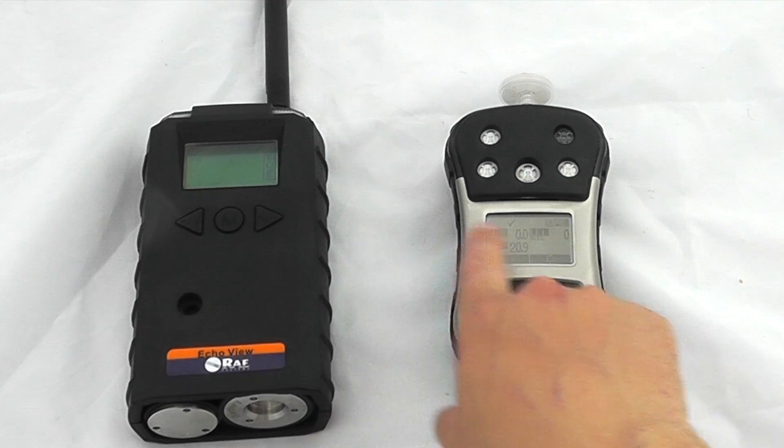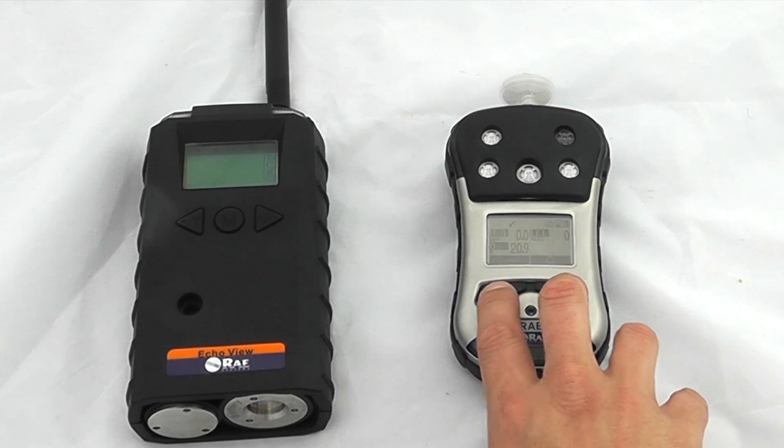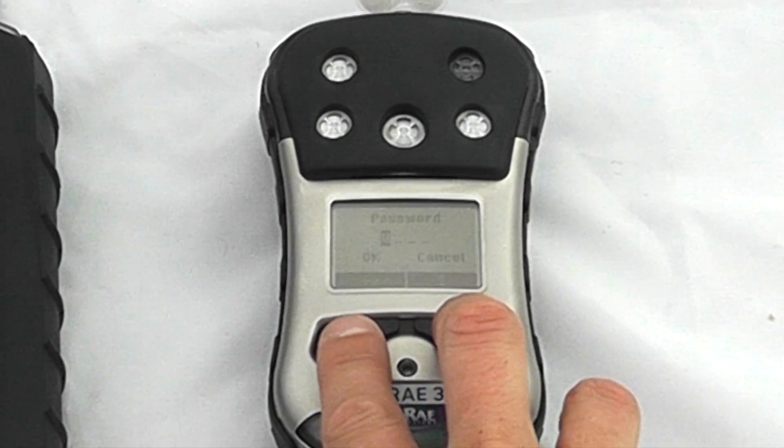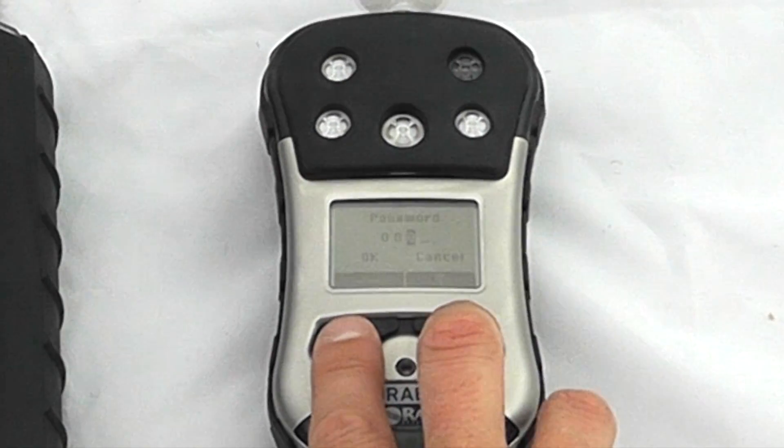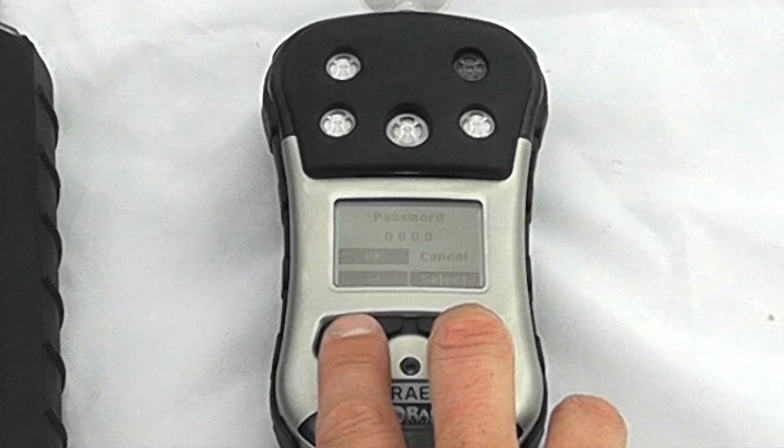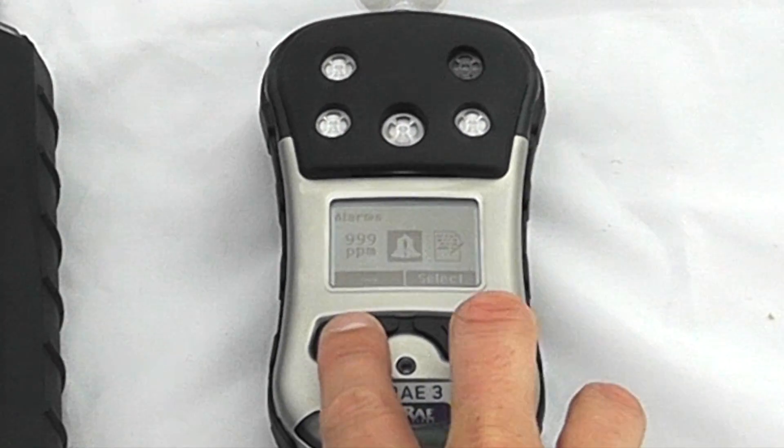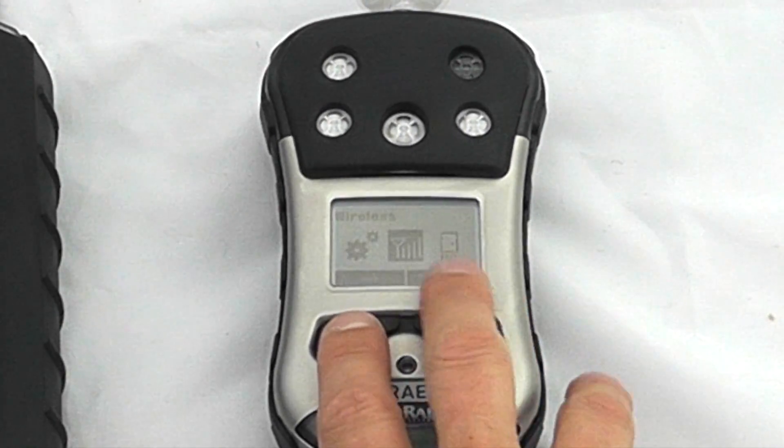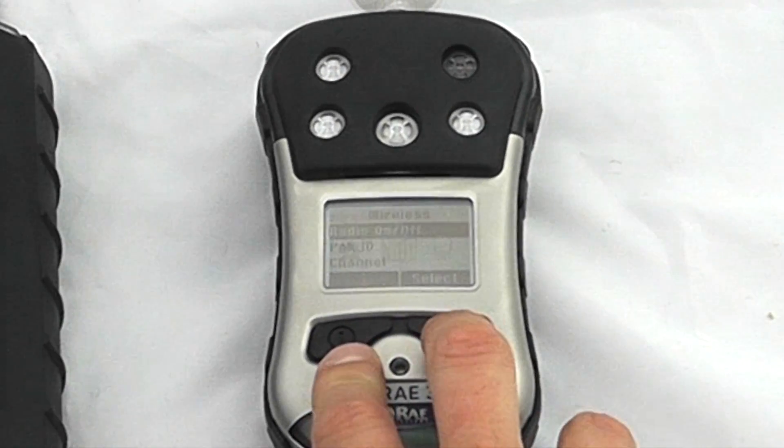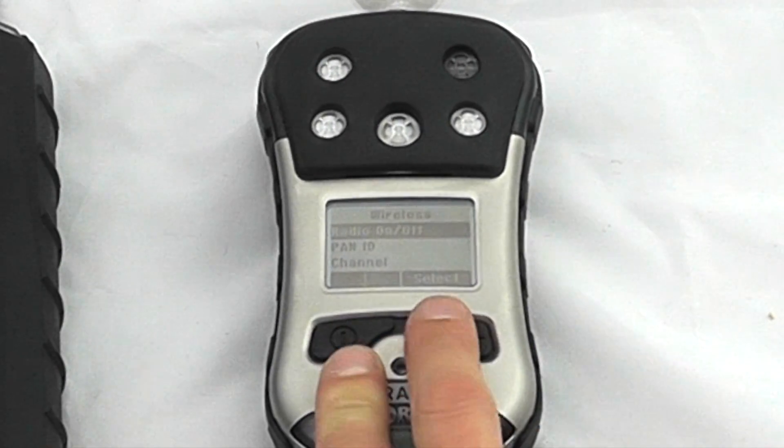Hold the mode and no button down to enter the standard menus. Scrolling to the wireless options, we can turn the radio on and off.